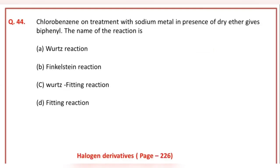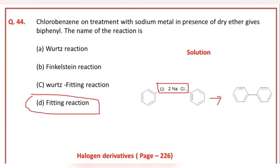Chlorobenzene on treatment with sodium metal in presence of dry ether gives biphenyl or diphenyl. The name of this reaction: the correct answer option of this question is D.